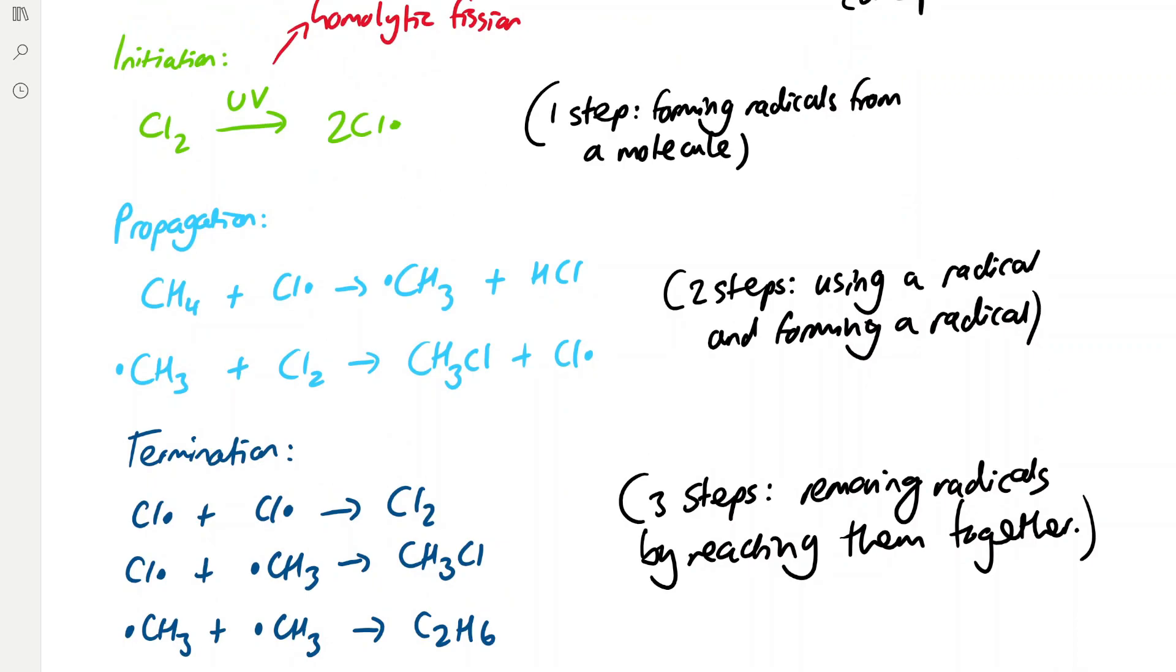In the propagation step, methane reacts with a chlorine radical to form CH3 radical and hydrochloric acid. This CH3 radical then goes on to react with chlorine which is excess from the initiation step to form chloromethane and a chloride radical.